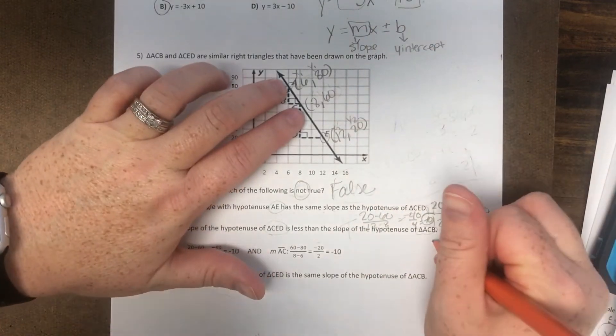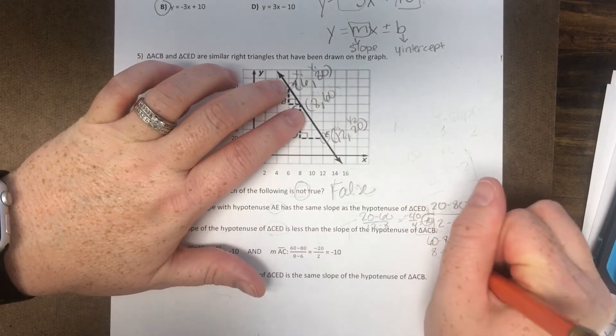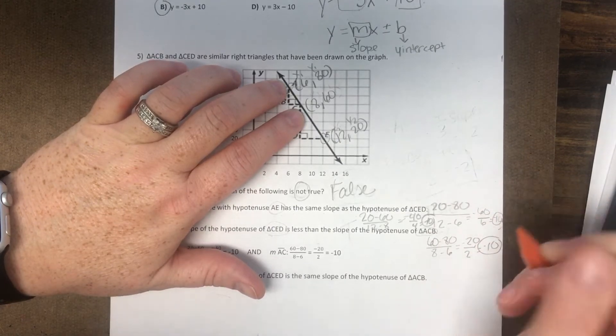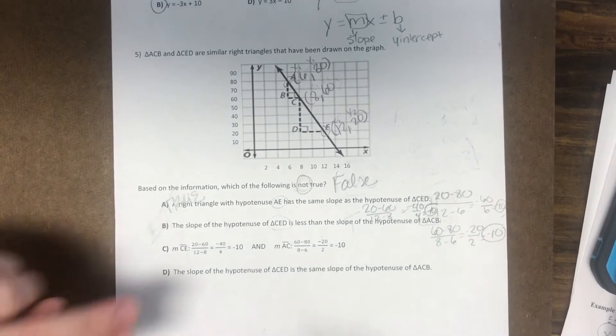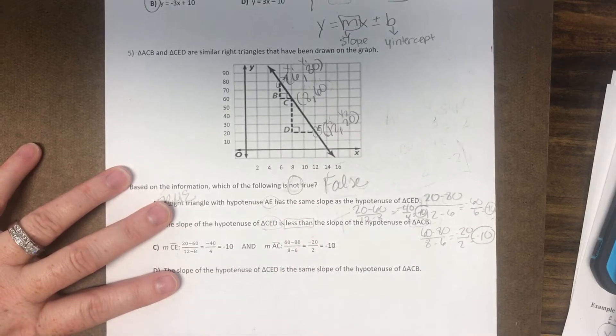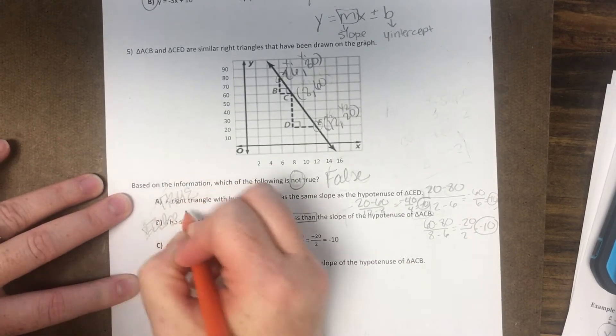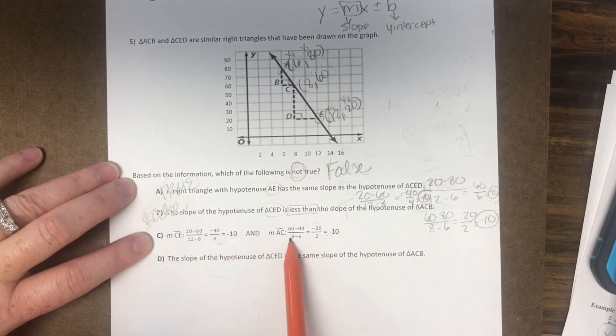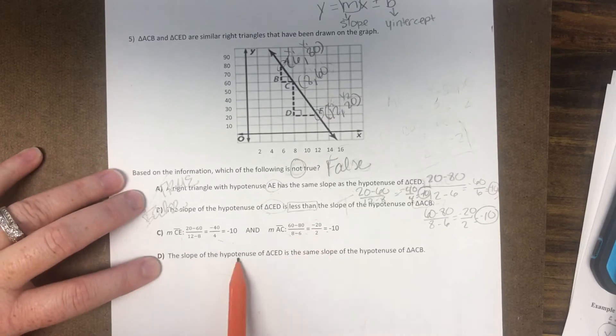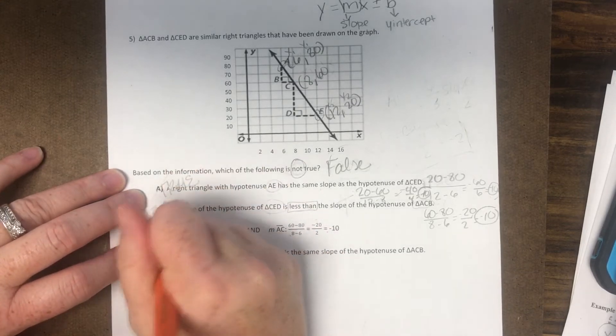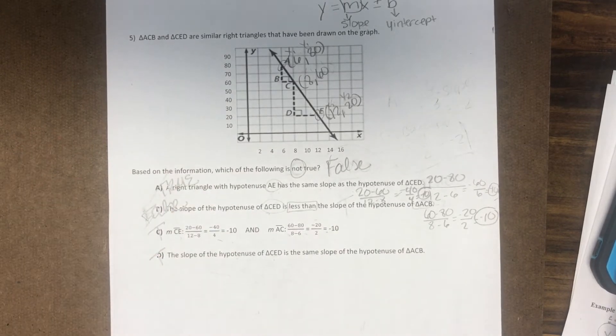So we've already figured out CED. We figured out it's right here, it's negative 10. So let's find ACB. So we would do 60 minus 80, 8 minus 6, negative 20 over 2, which is negative 10. So it is the same. So it looks like it's saying this one is less than. So is that the truth? No, that's going to be your false statement. If you figure all of these, we've already actually done all of that. They're saying that these are the same, and they are. And the slope of the hypotenuse of CED is the same as ACB, and that's true also. So B is your false answer.